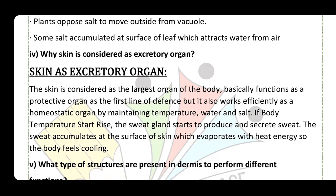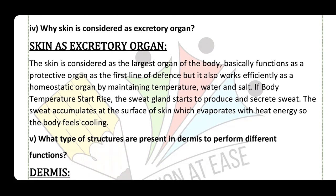Why is skin considered an excretory organ? Skin is the largest organ of the body. It basically functions as a protective organ and is the first line of defense. But it is also a homeostatic organ that maintains body temperature, water and salt. If body temperature starts to rise, sweat glands present in the skin start to secrete sweat. The sweat accumulates at the surface of skin, which evaporates with heat energy, so the body feels a cooling effect. The secretion of sweat is saltish, so the body also excretes salt through the skin.